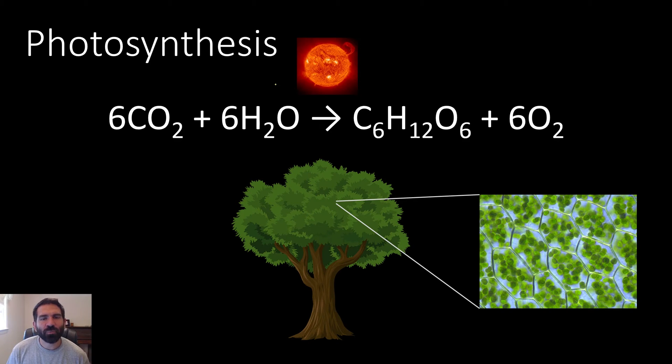Photosynthesis is an almost magical process that makes two important things: food and oxygen. Photosynthesis has the word photo and that means light. The light required for photosynthesis usually comes from the sun and it powers the whole reaction. The synthesis part means building, and in this case we're building food.